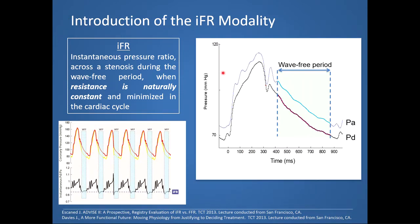This introduced the idea of IFR — the instantaneous wave-free ratio — the instantaneous pressure ratio across the stenosis during the wave-free period when resistance is naturally constant and minimized in the cardiac cycle. The wave-free period starts at 25% of diastole after the dicrotic notch and ends 5 milliseconds before the upstroke in aortic pressure. Importantly, the IFR measurement is stable during this wave-free period at any instantaneous point within this period.